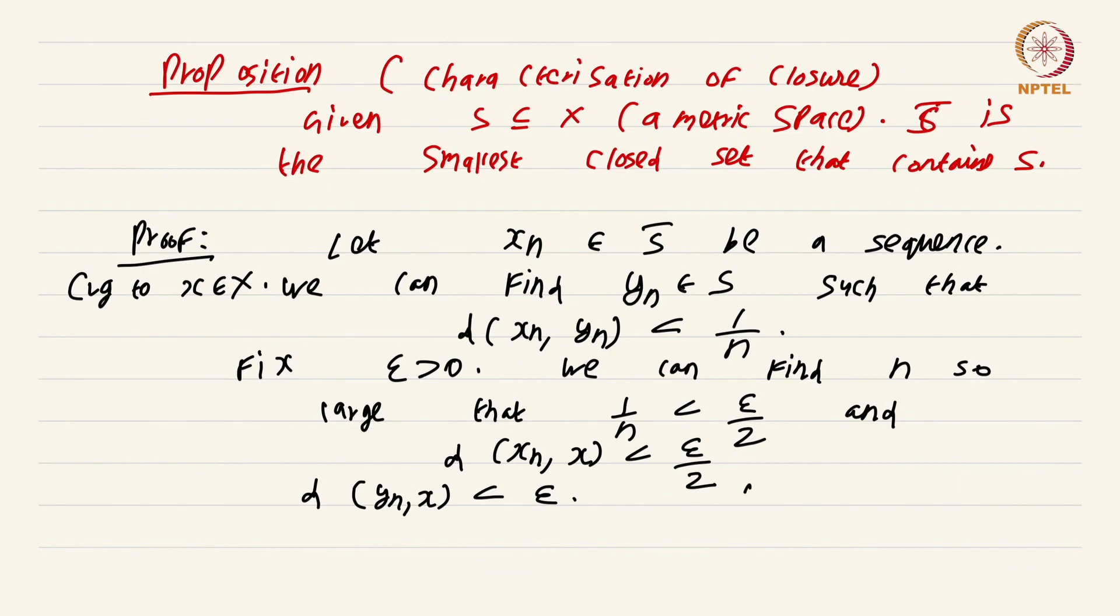Consequently y_n converges to x, and this means x is an adherent point of S, which means x is in S closure. This shows that the closure of a set is always a closed set.